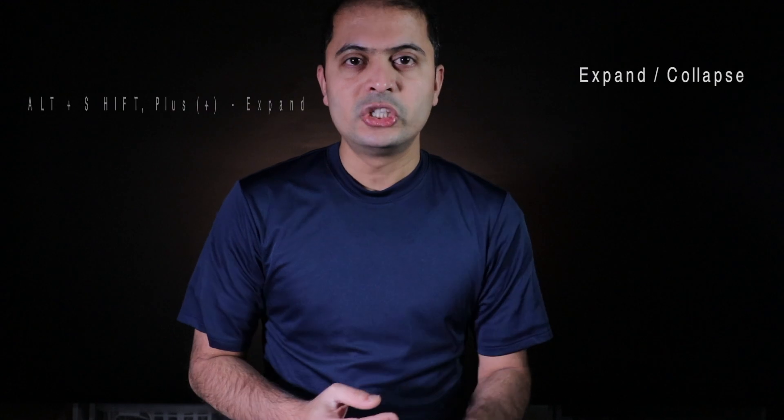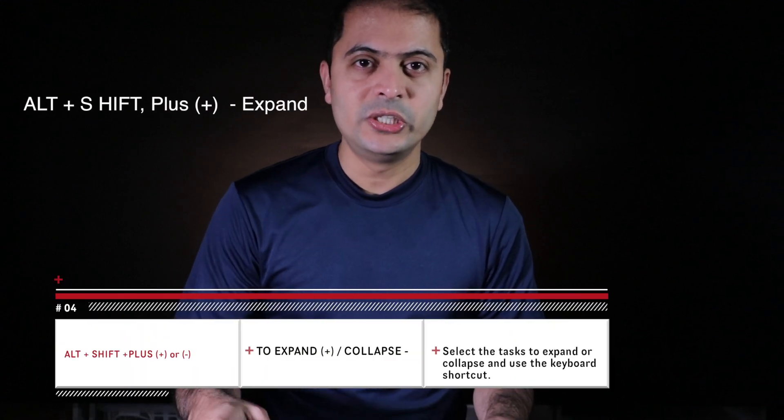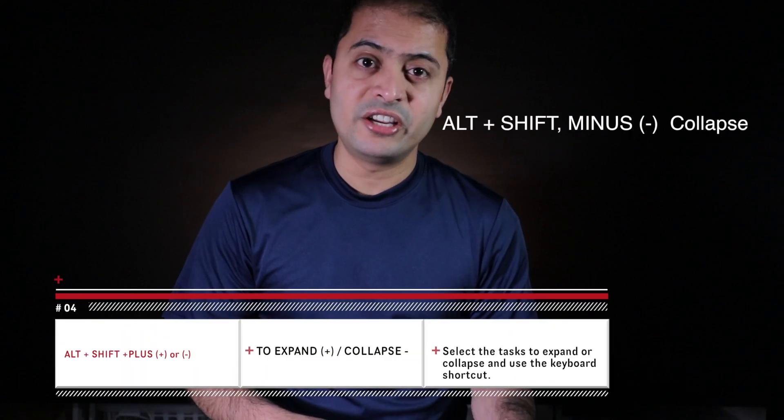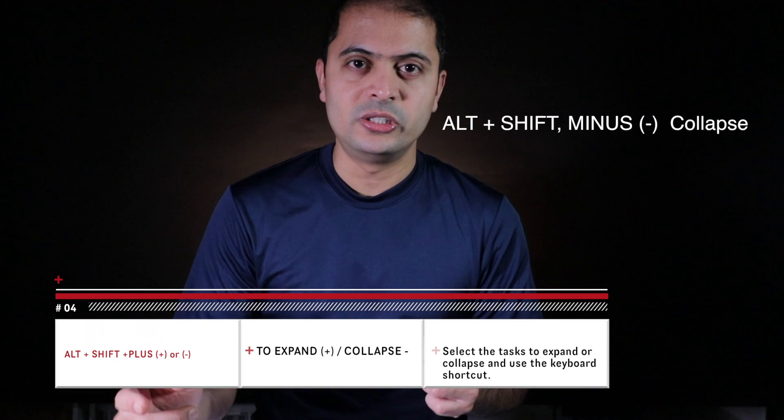This is a quick easy way to collapse and expand summary tasks. Use Alt+Shift+Plus to expand and Alt+Shift+Minus to collapse.